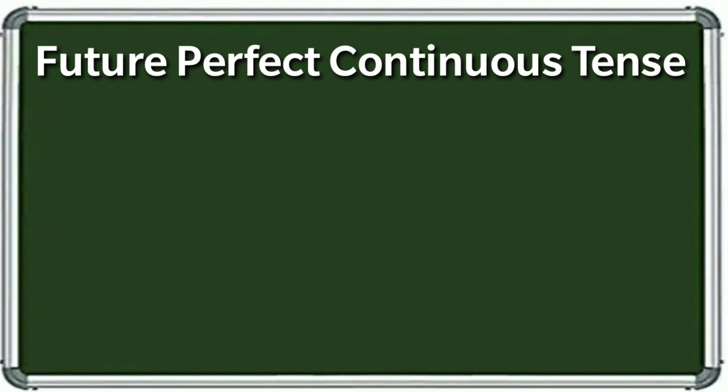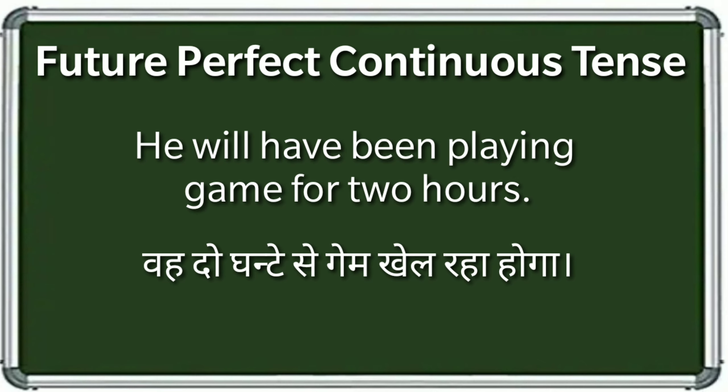आईए अब इस format को यूज़ करके examples देखते हैं. पहला example: वह दो घंटे से game खेल रहा होगा — He will have been playing game for two hours. Will have been auxiliary verb है और playing यहाँ पर V1 के साथ ing आ गया.